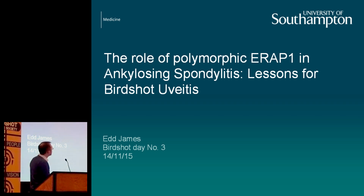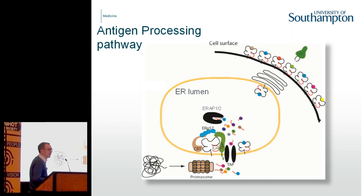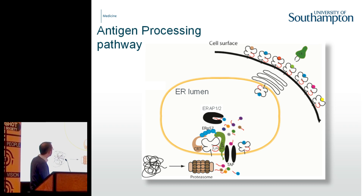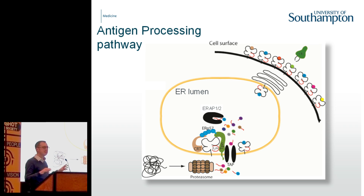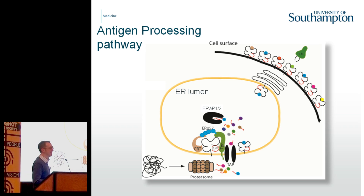My favorite protein is called ERAP1. Jonas has quite kindly already alluded to this pathway in his talk. ERAP1 plays a fundamental role in the antigen processing pathway whereby you start off with an intact protein, which gets chopped up into much smaller fragments called peptides. These peptides are then loaded onto your MHC class 1 molecule, or HLA molecule, which are then presented at the cell surface for recognition by your killer T cells, your CD8 T cells.